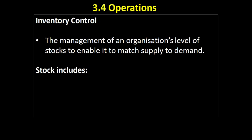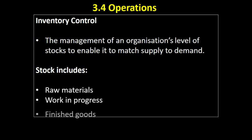The stock that a business holds includes three things: raw materials that have just arrived from the supplier, not yet transformed; work in progress, which is raw materials that have begun the transformation process but aren't finished and aren't ready for sale; and finally finished goods that have been transformed from raw materials into the final product and are ready to go.